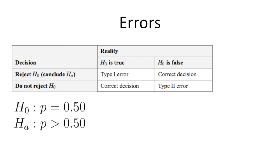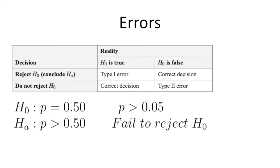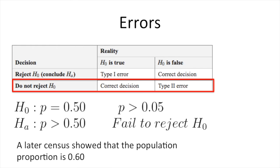Here's another example. We tested H-null: P equals 0.50 versus H-alternative: P greater than 0.50, and found a p-value greater than 0.05, so we failed to reject the null hypothesis. Note that 'p' in the hypotheses means population proportion, while 'p-value' is the probability of obtaining results as extreme or more extreme given the null is true — these are different p's. If a later census showed the population proportion is really 0.60 — meaning the null hypothesis is really false — we made a type 2 error.